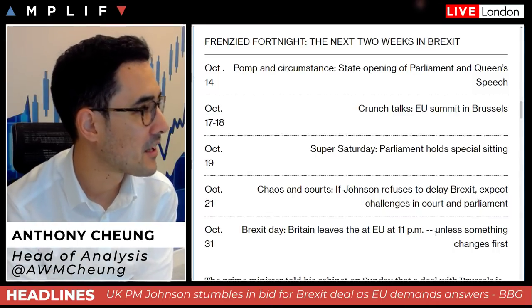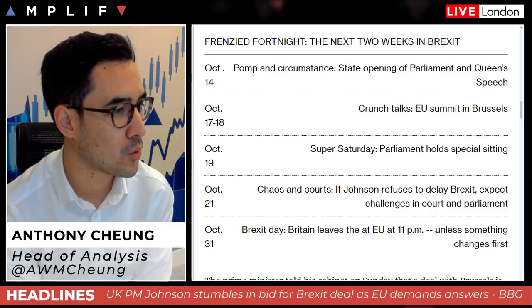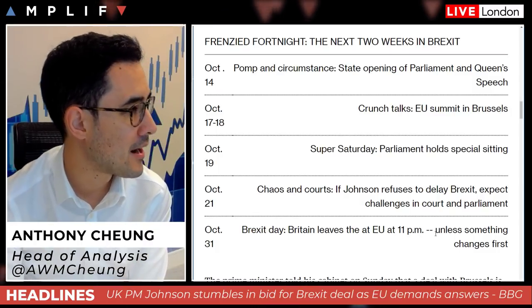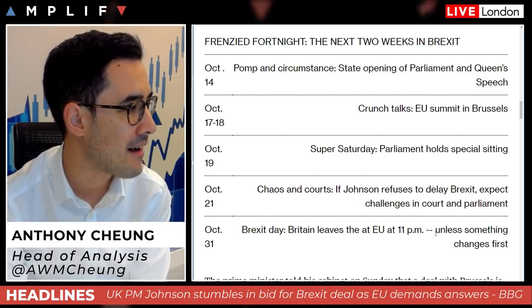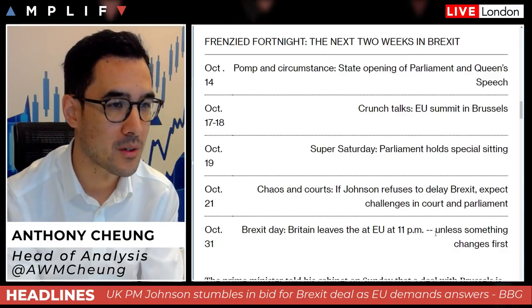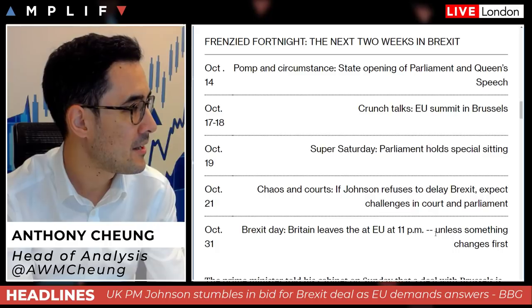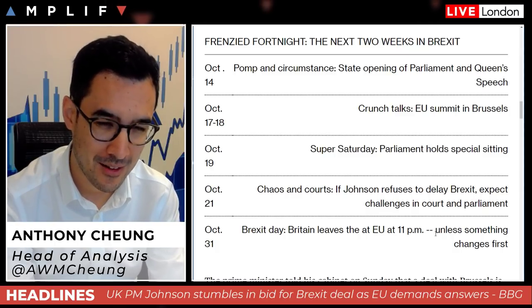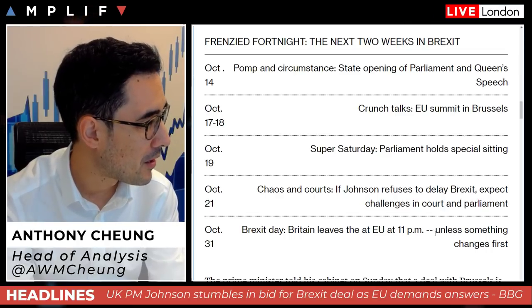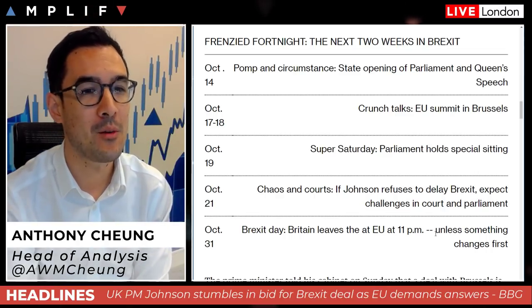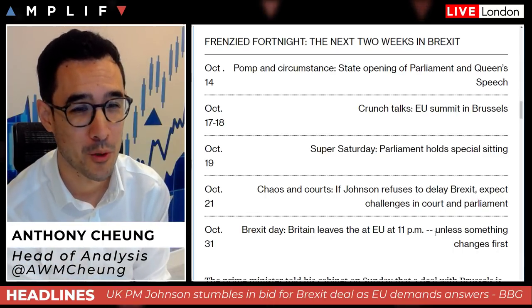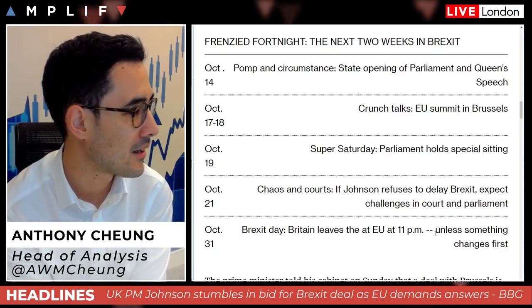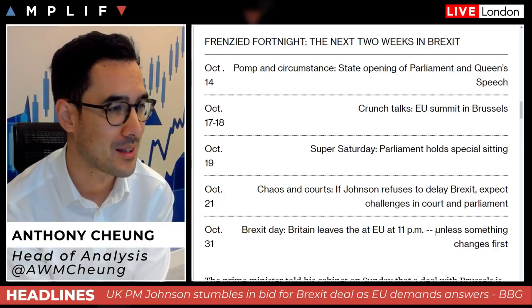Those dates — the 17th and 18th, Thursday and Friday — matter because of the EU summit happening then, which was supposed to be when a deal could be ratified if agreed over the weekend or today. Then we have 'Super Saturday' — an additional special parliamentary sitting. I believe that's only the fourth time since 1932 that parliament has had a special sitting on a Saturday, previously only happening when war broke out in the late 1930s. It's very unusual, but it shows the commitment on all sides to try to get a deal done.